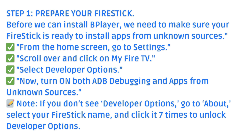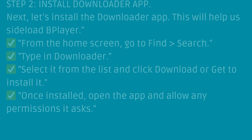Scroll over and click on My Fire TV. Select Developer Options. Now turn on both ADB debugging and Apps from Unknown Sources. Note: if you don't see Developer Options, go to About, select your Fire Stick name, and click it 7 times to unlock Developer Options.